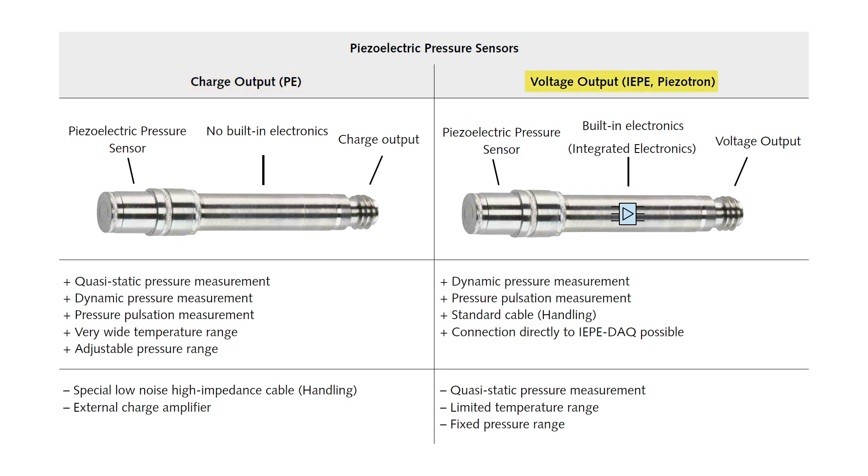If the electronic circuit is integrated into the sensor housing, then it is referred to as a voltage output or IEP sensor. Depending on the application, piezoelectric pressure sensors with charge or voltage output may be suitable.